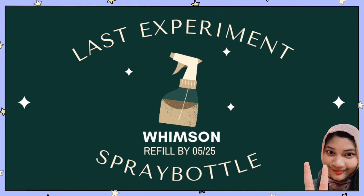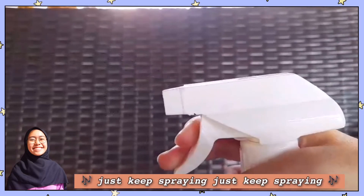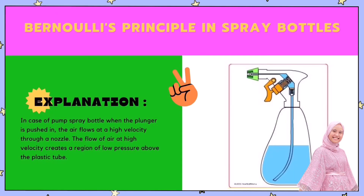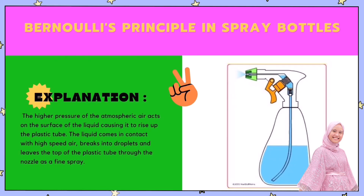So let's proceed with the last experiment, which is the spray bottle. How can Bernoulli's principle be applied in spray bottles? When the plunger is pushed in, the air flows at a high velocity through a nozzle. The flow of air at high velocity creates a region of low pressure above the plastic tube. The higher pressure of the atmospheric air acts on the surface of the liquid, causing it to rise up the plastic tube.